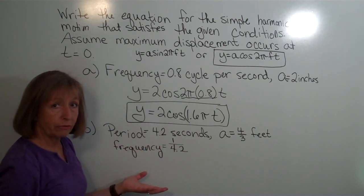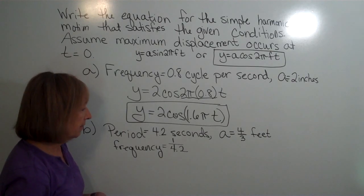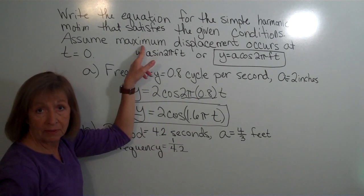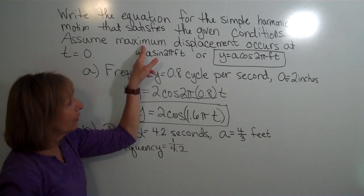And then it's 1 over 4.2 cycles per second. Now, I also have my amplitude. It told me to assume maximum displacement was happening at t equals 0, so